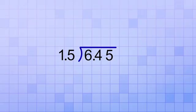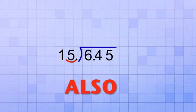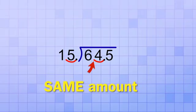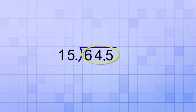So in this case, if we want to shift the decimal point in our divisor one place to the right so that it's 15, we can do that as long as we also shift the decimal point in the dividend by the same amount, which will turn it into 64.5.